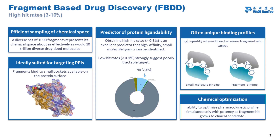Another advantage is that fragments often identify unique binding profiles because they can find hidden pockets. It can be complicated to grow the fragment into something useful, and you need a lot of medicinal chemistry efforts to optimize the fragment. However, during this chemical optimization, you have a real chance to optimize affinity and physicochemical properties simultaneously, and this is reflected in the pharmacokinetics profile of the compound.